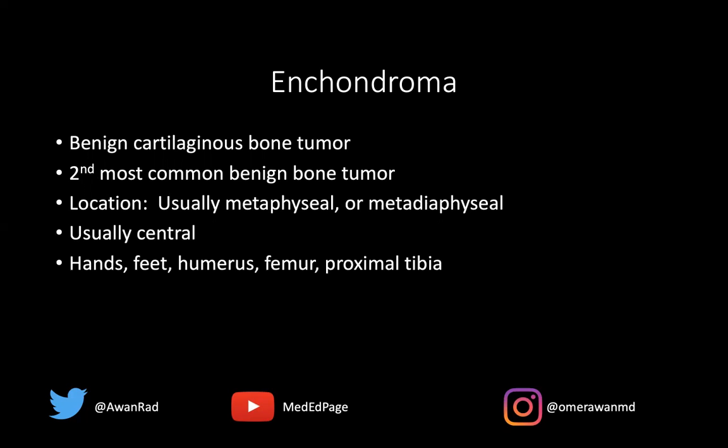Fifty percent of enchondromas occur in the hands and feet — by far the most common location. You can also see them in the humerus, the femur, and the proximal tibia, in that order. So hands and feet 50% of the time, then the humerus, then the femur, then the proximal tibia.